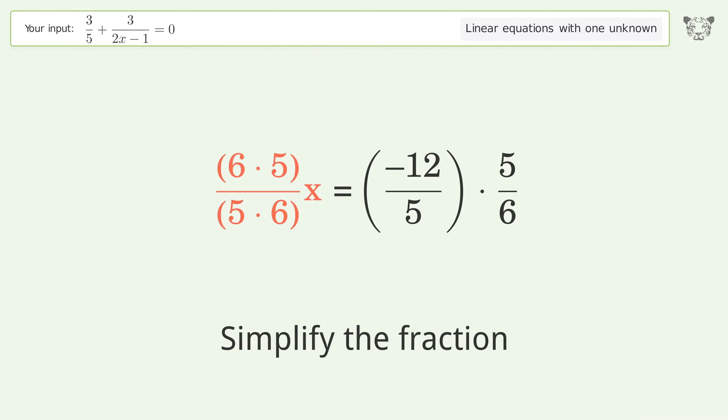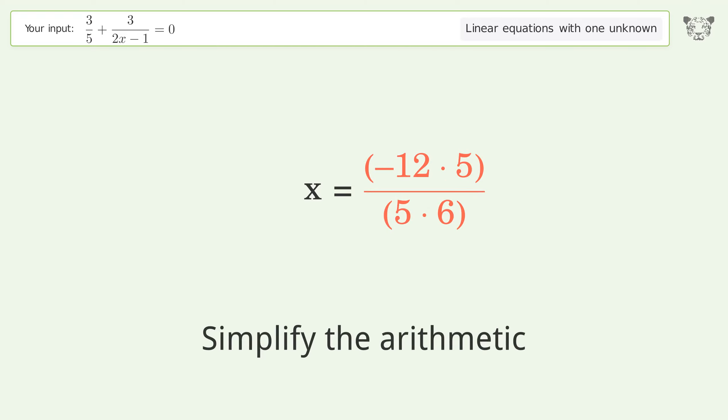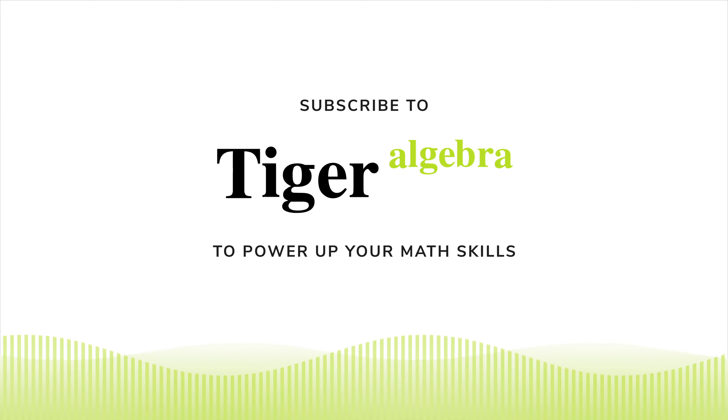Simplify the fraction. Multiply the fractions. Simplify the arithmetic. And so the final result is x equals negative 2. Thank you.